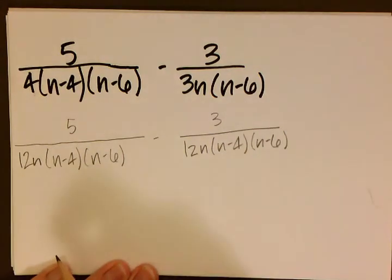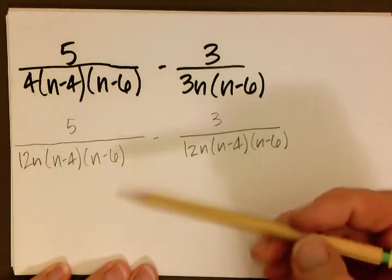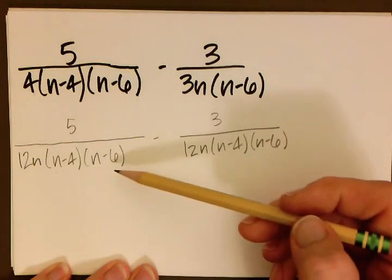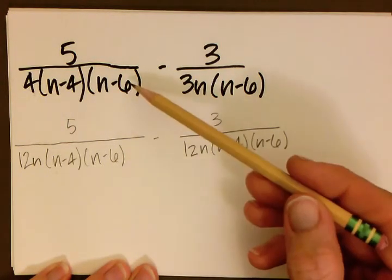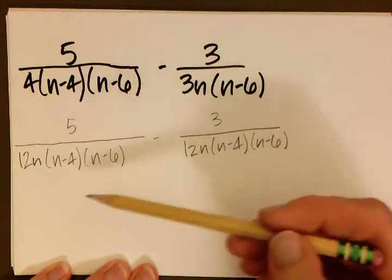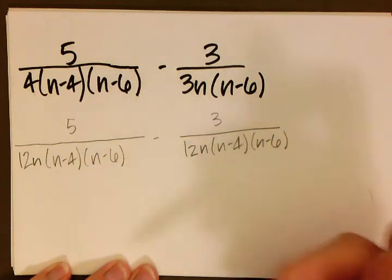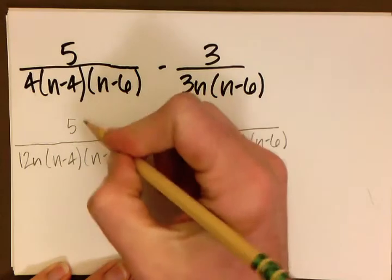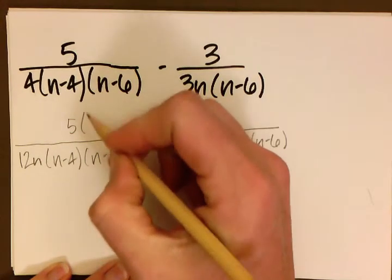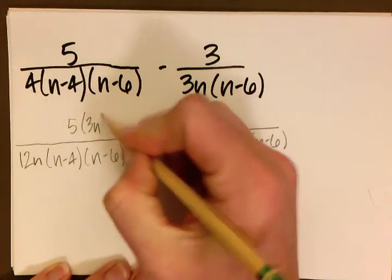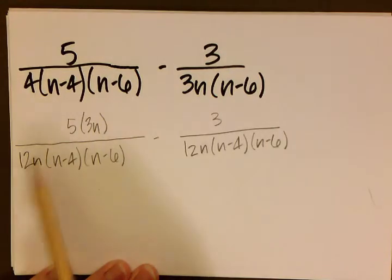The next thing we want to do is ask ourselves, what do we have to multiply our denominator by in order to get it to be the common denominator? In the first case, we multiplied it by 3n. And because we know that whatever we do to the denominator, we always have to do it to the numerator, we are going to take the numerator, that 5, and multiply that by 3n.